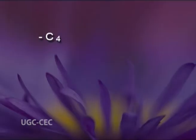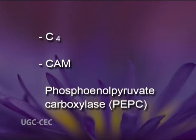Biochemical CCMs concentrate carbon dioxide in one temporal or spatial region through metabolite exchange. C4 and CAM photosynthesis both use the enzyme phosphoenolpyruvate carboxylase, or PEPC, to add carbon dioxide to a 3-carbon sugar. PEPC is faster than rubisco, more selective for carbon dioxide, and exhibits no reaction with oxygen.